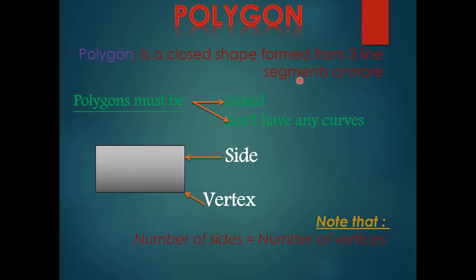My students, again — what is a polygon? A closed shape formed from three line segments or more, doesn't have any curve, and must be a 2D shape with sides connecting at vertices. The polygon must be closed, and the line segments must connect.